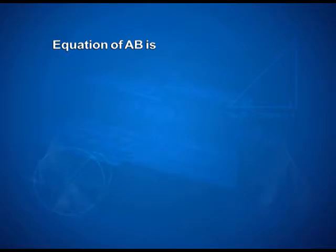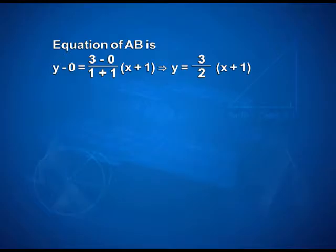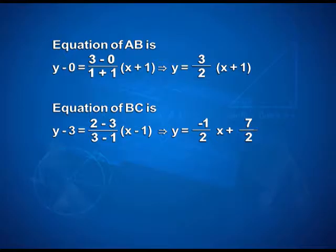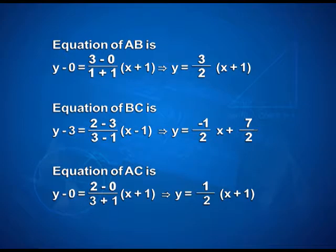Firstly, we calculate the equation of line AB. Equation of AB: y - 0 = (3 - 0)/(1 + 1) · (x + 1), which gives y = (3/2)(x + 1). Equation of BC: y - 3 = (2 - 3)/(3 - 1) · (x - 1), which gives y = -x/2 + 7/2. Equation of line AC: y - 0 = (2 - 0)/(3 + 1) · (x + 1), which implies y = (1/2)(x + 1).